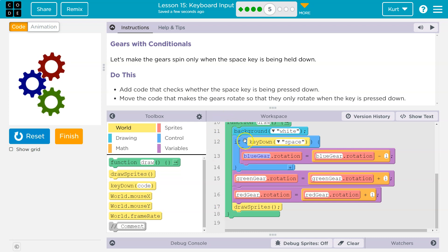And then every time it runs through this loop, which is 30 times a second, we're again asking, hey, space key down. Nope. Okay, we're good. Skip over this. The blue gear won't move, but move the others.